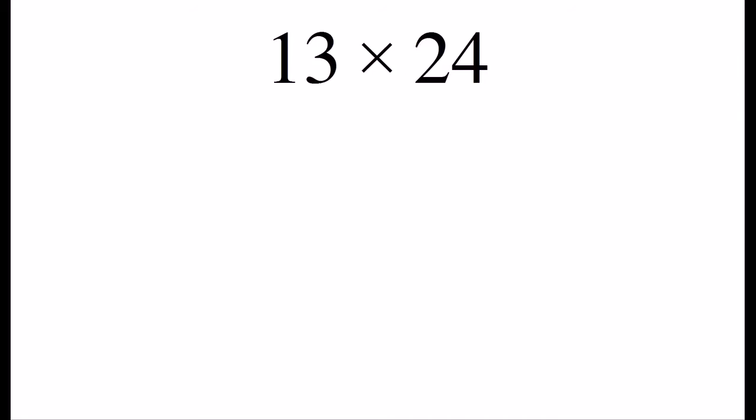So let's do an example of 13 times 24. The method involves four steps. The first step is to take the number on the left and repeatedly divide it in half until you get to the number 1. So we'll take 13. When we divide that in half, we get 6, and we'll ignore the remainder. When we divide 6 in half, we get 3, and when we divide 3 in half, we get 1, and we'll ignore the remainder of 1. So the first step is to take the number on the left and repeatedly divide it in half.